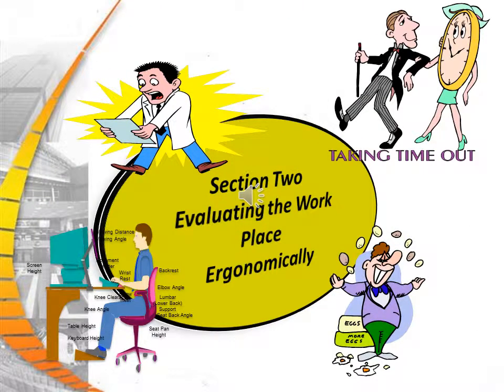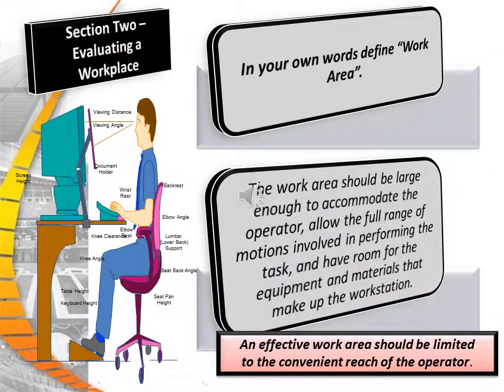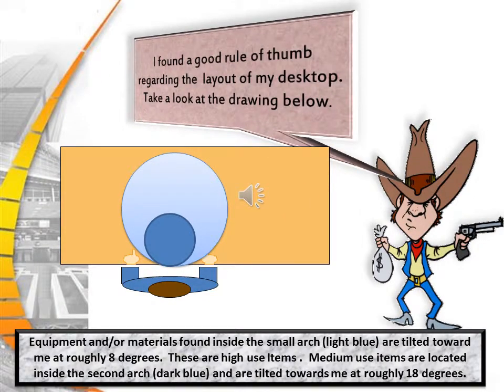Section 2: Evaluating the Workplace Ergonomically. The work area should be large enough to accommodate the operator, allow a full range of movements involving performing the task, and have room for equipment and materials. An effective work area should be limited to the convenient reach of the operator. Equipment found inside the small arc (light blue) are tilted toward the operator — these are high use items. Medium use items are located inside the second arch (dark blue) and are shifted toward at 18 degrees.